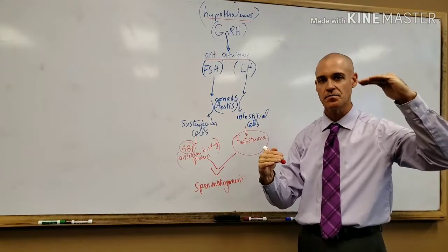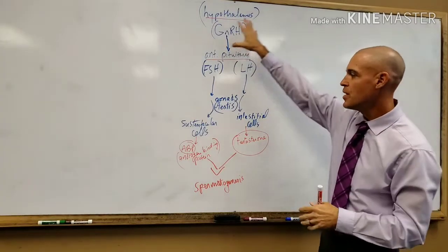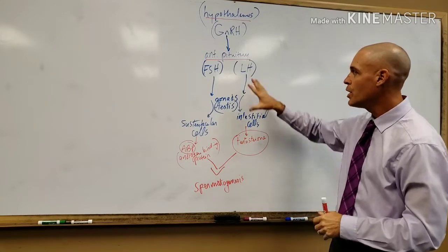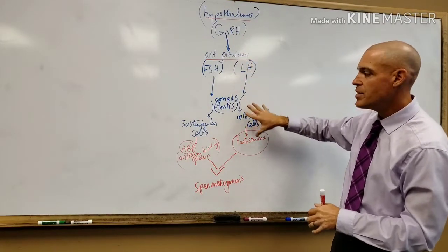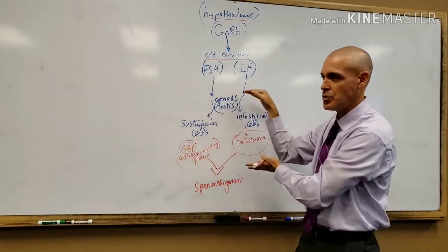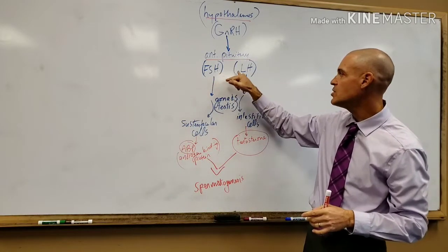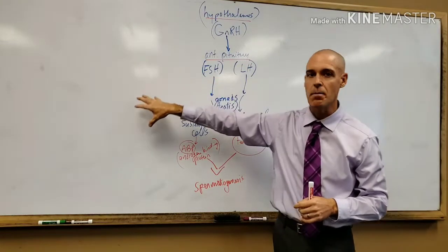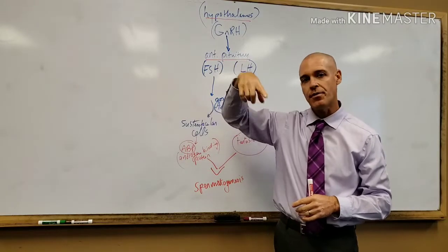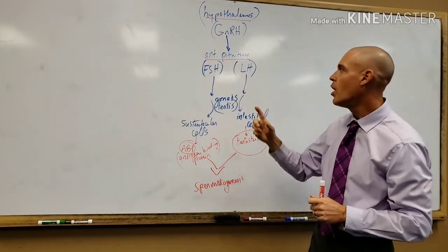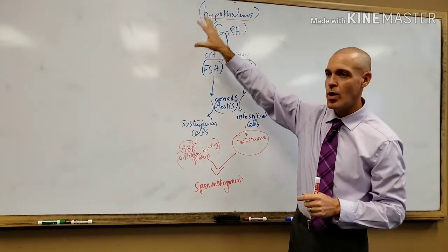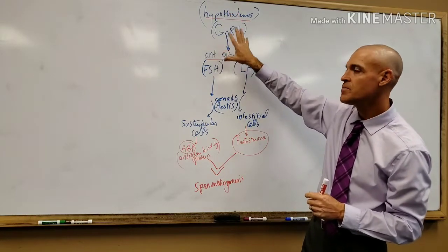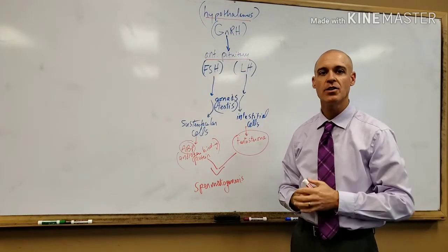If you watched the other video on the female reproductive system, we gave a flow chart and covered the cycles, showing how FSH and LH affect the ovarian cycles and how estrogen and progesterone affect the menstrual cycle. There's also another video on the hypothalamus-pituitary relationship with a lot of information there. As always, good luck and good studying.